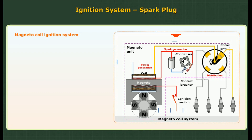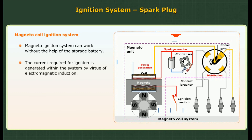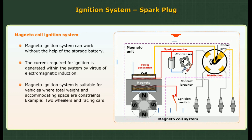Magneto coil ignition system: The magneto ignition system can work without the help of a storage battery. The current required for ignition is generated within the system by virtue of electromagnetic induction. It is suitable for vehicles where total weight and accommodating space are constraints, such as two-wheelers and racing cars.